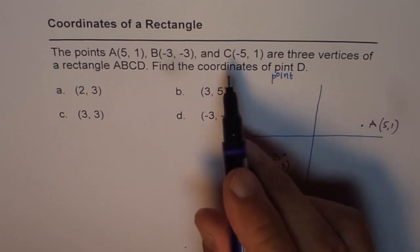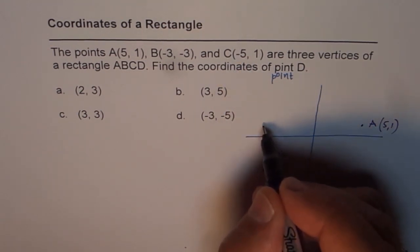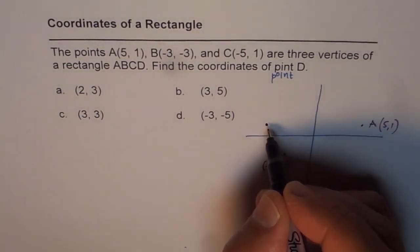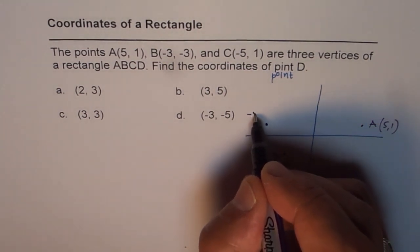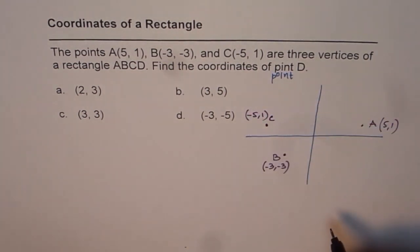C is (-5,1), so let's say -5 and 1, almost at the same line there. We have (-5,1), and this is point C for us. Now we need to find where point D is.